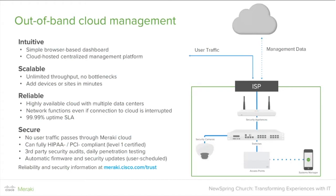Our architecture is out-of-band, meaning the cloud is purely used as a centralization point for management of your devices. You can literally be anywhere in the world with any browser and an internet connection to monitor, manage, configure, and troubleshoot your Meraki network. User traffic — your emails, web traffic, VoIP — goes directly to its destination IP address. We don't pass that through the cloud, which is critical to our scaling model.